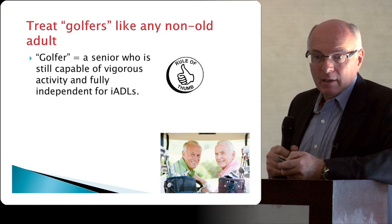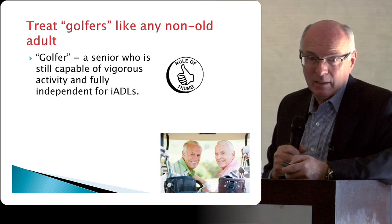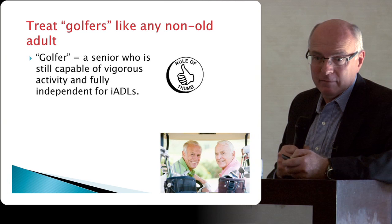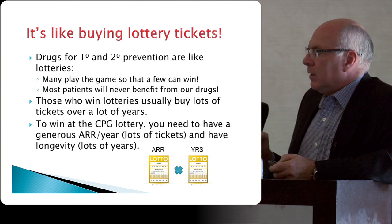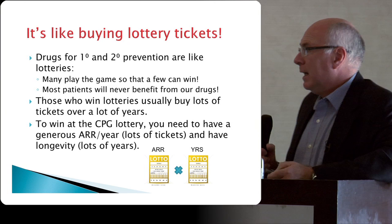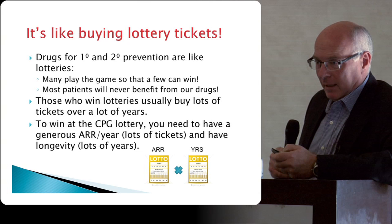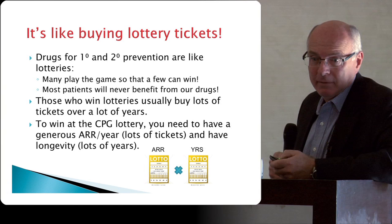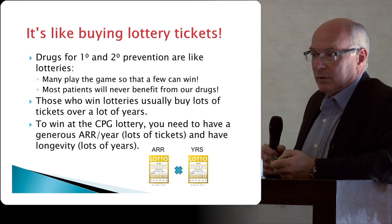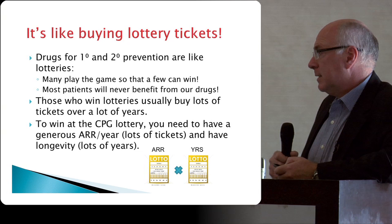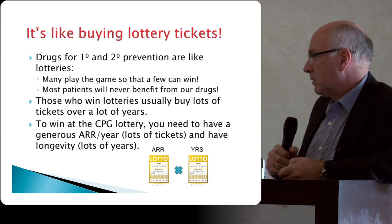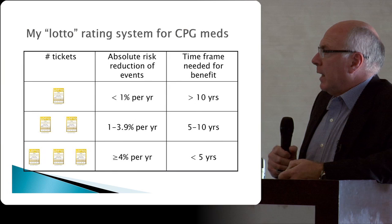Here's a rule of thumb: treat 'golfers' — meaning elderly people who are still fully independent and capable of vigorous activities — like any other non-old adults, assuming a life expectancy greater than 10 years. Drugs for primary and secondary prevention are very much like playing the lottery: so many play so that a few can win, and most people who take these drugs will never benefit from them. Winners of lotteries buy a ticket week after week, year after year — CPG drugs are kind of like that. The payoff is the product of absolute risk reduction times number of years.